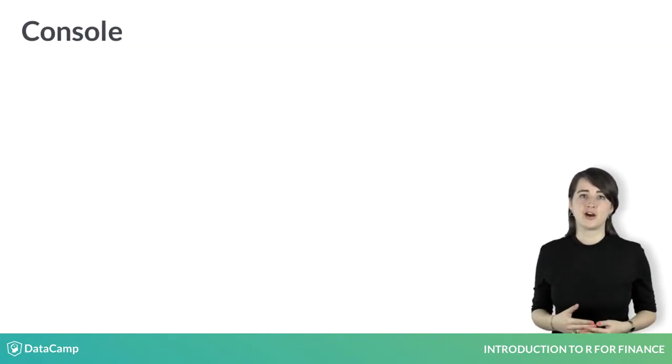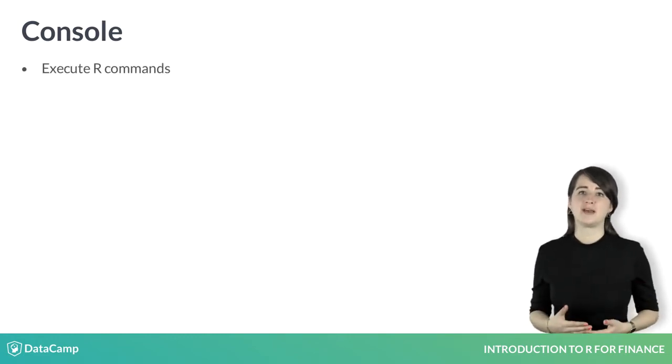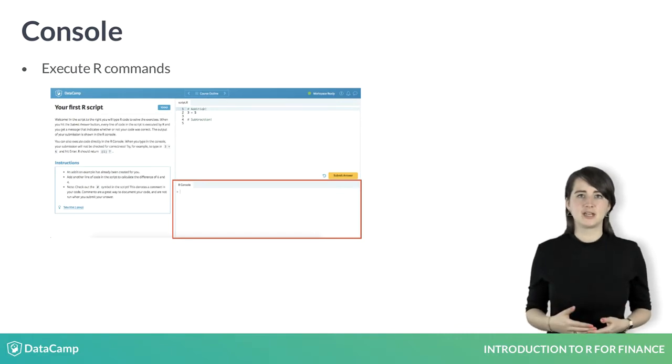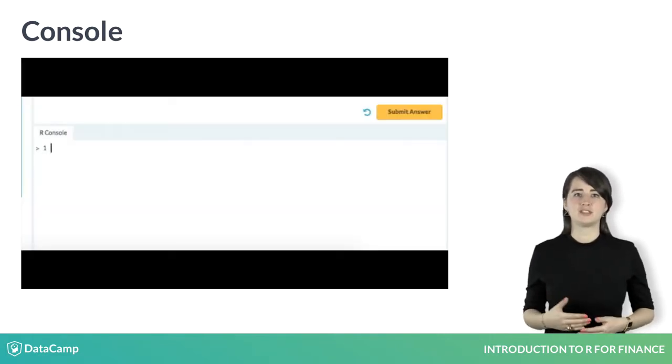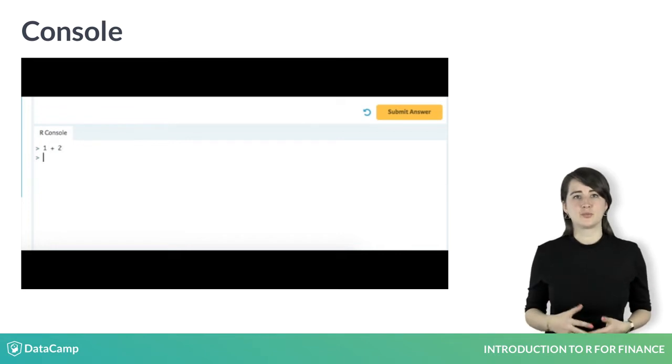An important component of R is the console. The R console is where you can execute R commands. In DataCamp's interactive interface, the console can be found here. Let's try to calculate the sum of 1 and 2. We simply type 1 plus 2 at the prompt and hit enter. R interprets what you typed and prints the result. Pretty cool, right?